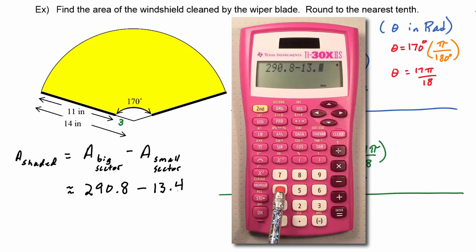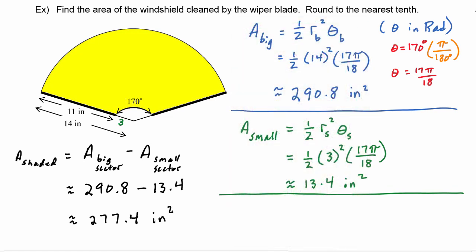And we see that the area that's cleaned off by the windshield wiper is approximately 277.4 square inches. Now this was a word problem, so we'll write our answer in a sentence. So we could say something like: the area